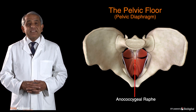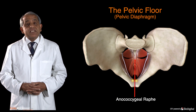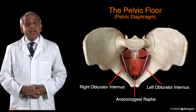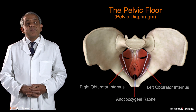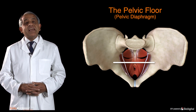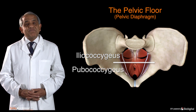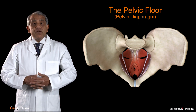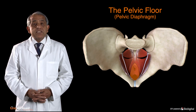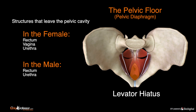Each levator ani muscle arises from a linear fascial thickening on the inner aspect of the obturator internus muscle, which is a wide muscle that drapes the inner surface of the true pelvic cavity. Each levator ani muscle is described as having two parts: the posterior half is referred to as the iliococcygeus, and the anterior half is called the pubococcygeus. Anteriorly, there is a natural gap between the medial edges of the right and left levator ani muscles called the levator hiatus, and it is through this gap that the rectum, vagina, and urethra leave the pelvic cavity.